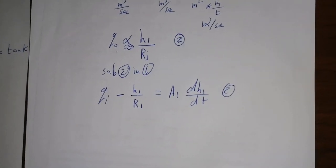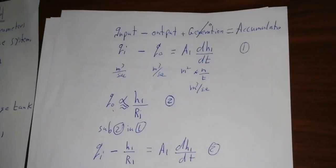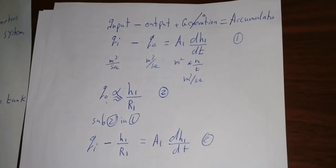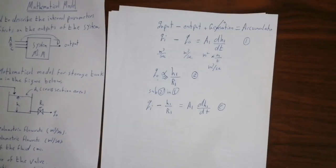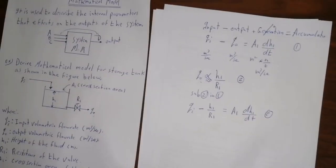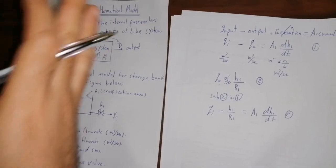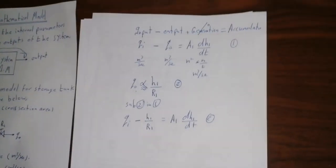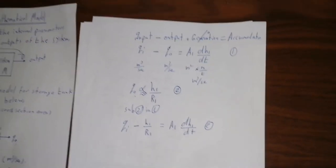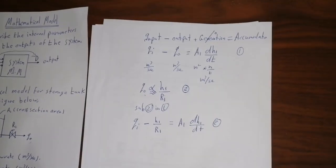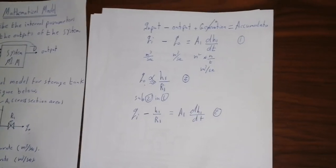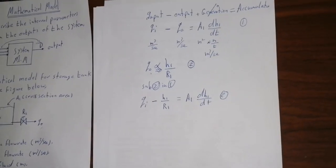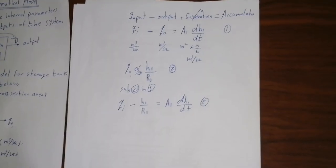Any system has an initial condition — a steady state. Every system begins at a specified time: a specific year, month, day, minute, and second. This is our initial time. For every mathematical model, there is an initial condition, and we want to derive the mathematical model in a general form applicable to any formula or system.